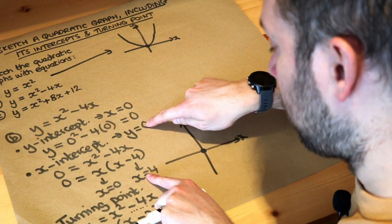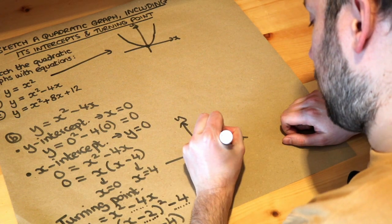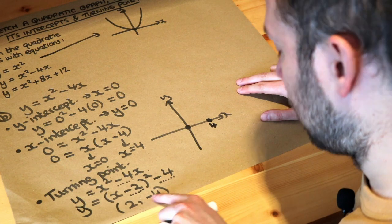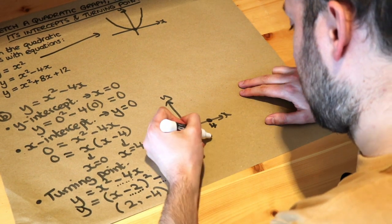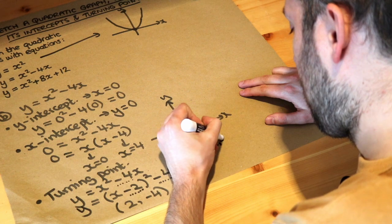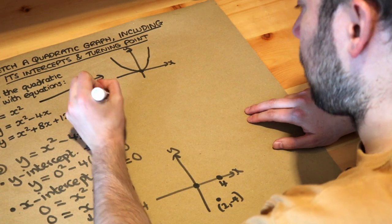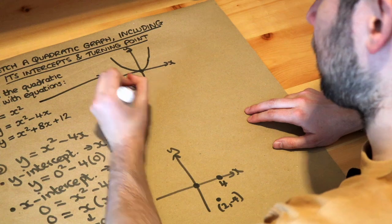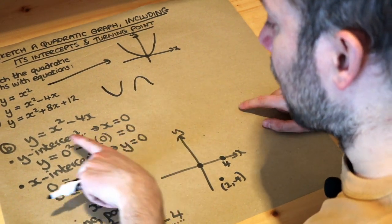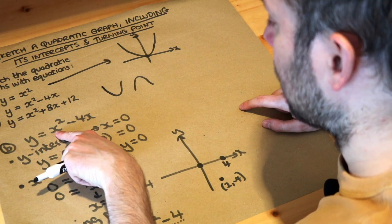Putting it all together: when x is 4, y is also 0, giving the point (4, 0), so we plot 4 on the axis. We've also worked out the turning point (2, minus 4), which sits about here on the graph. Quadratic graphs always have either a u-shape or an upside-down hill shape, depending on whether the x squared term is positive or negative.